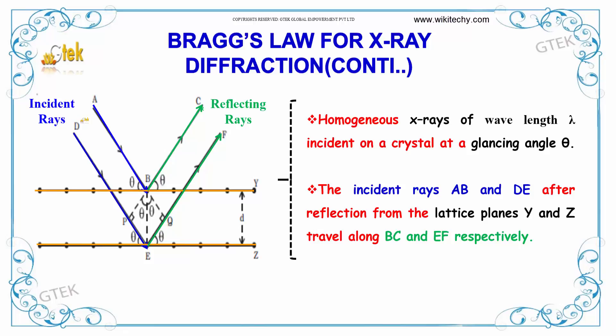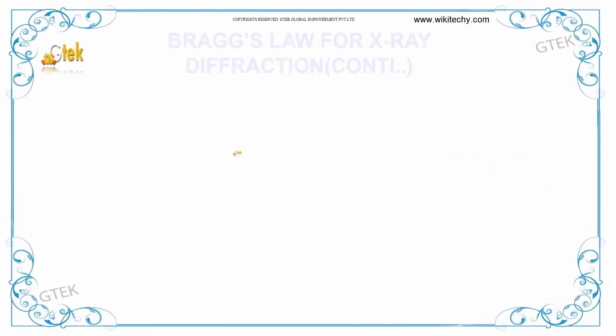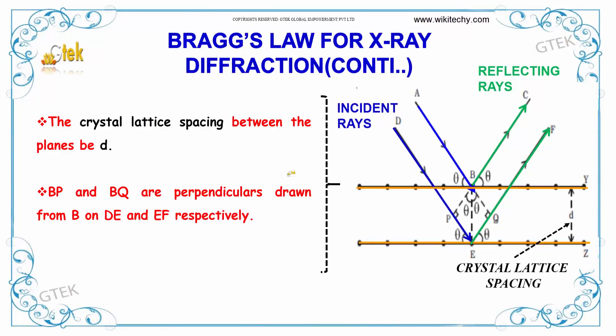The homogeneous X-rays of wavelength lambda is incident on a crystal at a glancing angle of theta. The incident rays A-B and D-E, after reflection from the lattice planes Y and Z, travel along B-C and E-F. The crystal lattice spacing between the planes is D. B-P and B-Q are perpendiculars drawn from B on D-E.